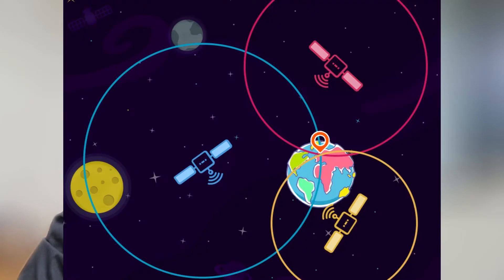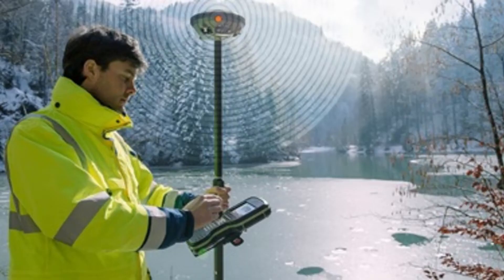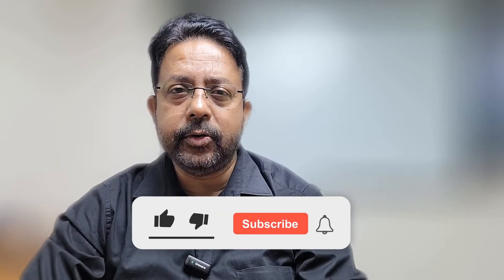In recent years, GNSS has become an indispensable tool in land surveying. It uses signals from multiple satellites to determine the precise location on earth, greatly simplifying the surveying process. We will discuss more about this in later videos.